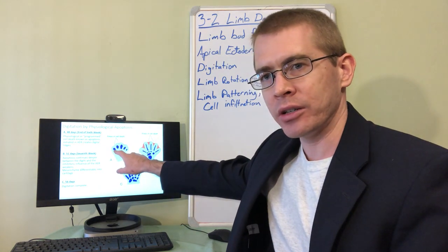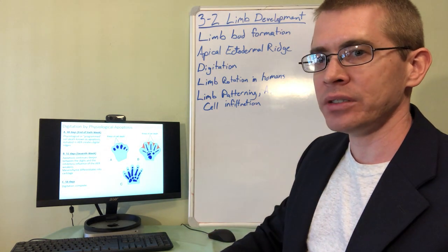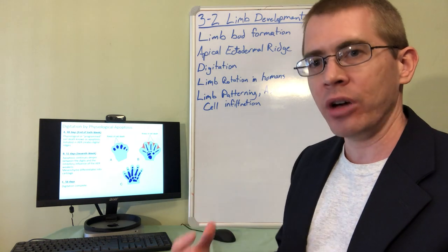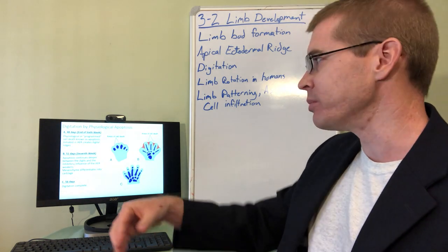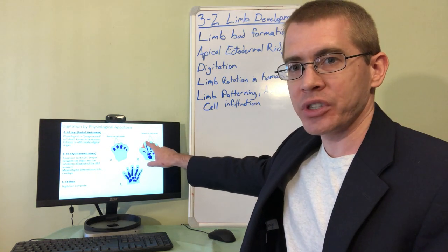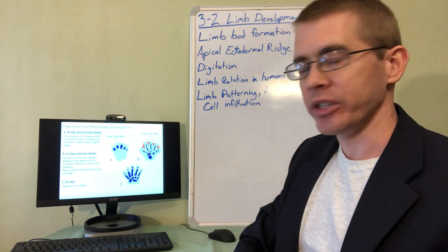And once that occurs, a process of programmed physiological cell death called apoptosis, it's Greek it's pronounced apoptosis, falling apart is what it means, results in the death of the cells between the bone models of the digits.